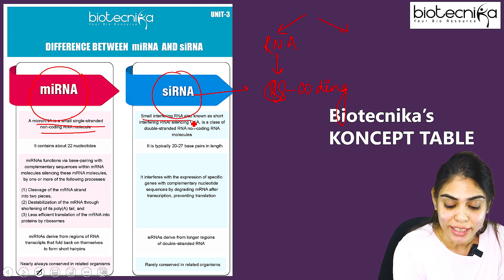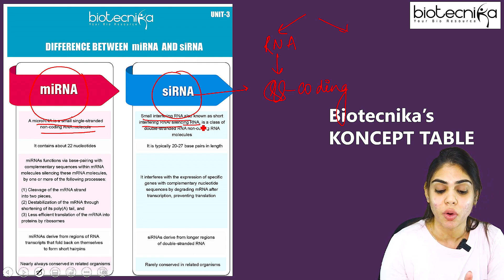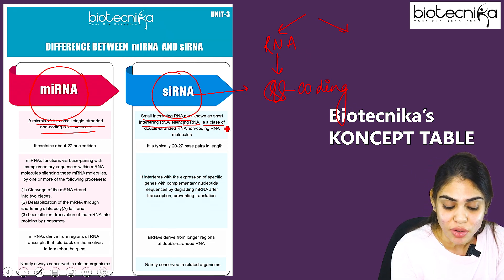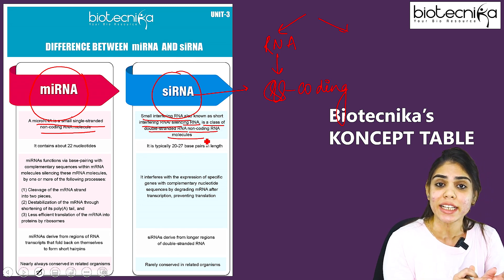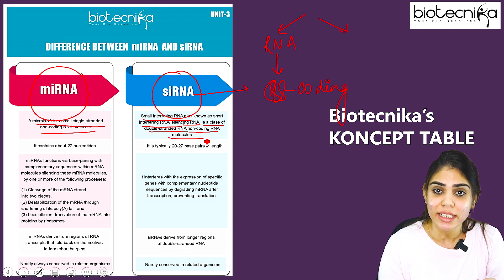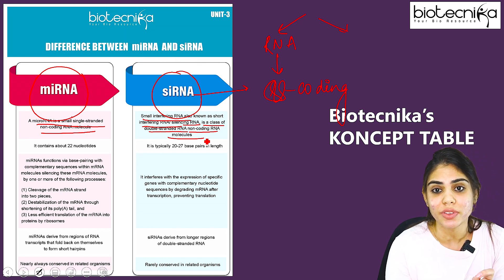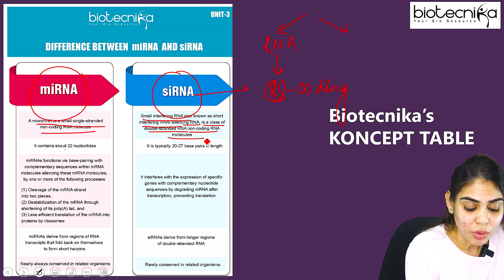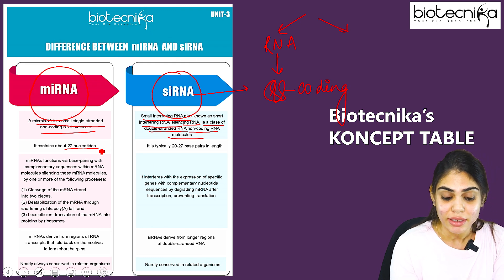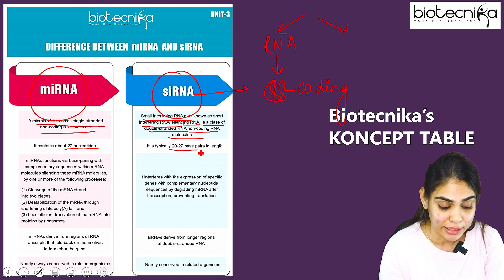Whereas small interfering RNA, also called short interfering RNA, is responsible for the silencing of RNA. It is a class of double-stranded non-coding RNA molecule. So miRNA is small but single-stranded, and siRNA is small but double-stranded. The size of miRNA is about 22 nucleotides in length, whereas siRNA is 20 to 27 base pairs in length.